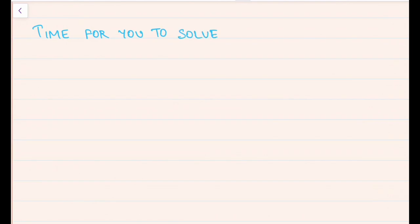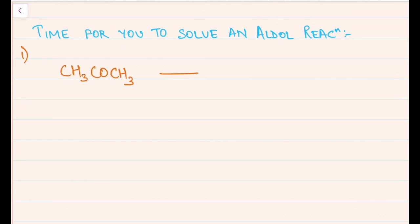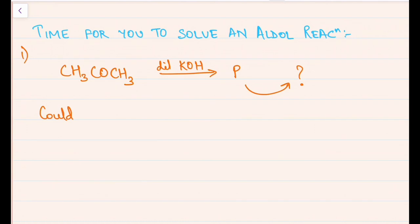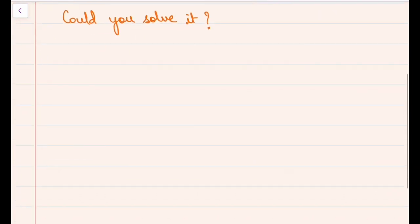Now it's time for you to solve an aldol reaction. We'll take CH₃COCH₃ in the presence of dilute KOH — what product do you get? Step one: repeat the reactant, so we write the molecule twice.